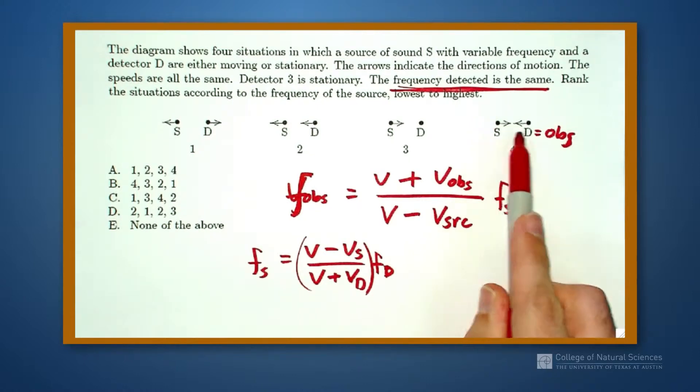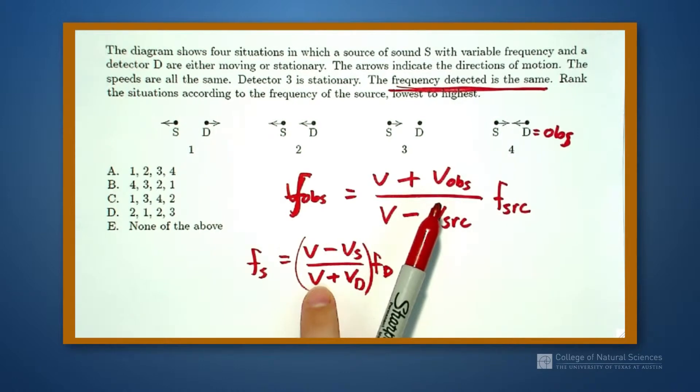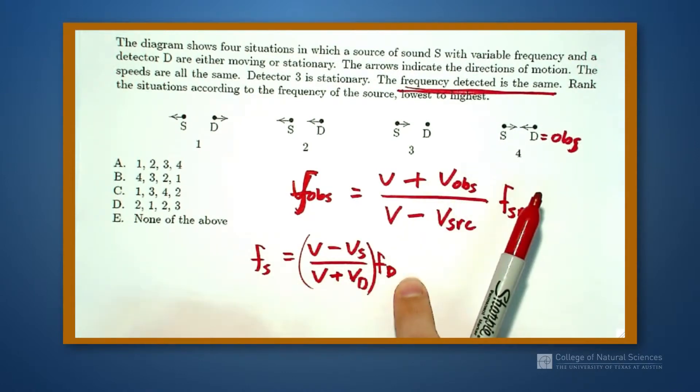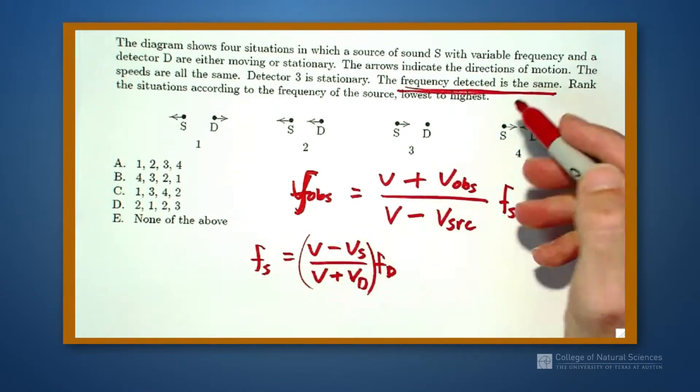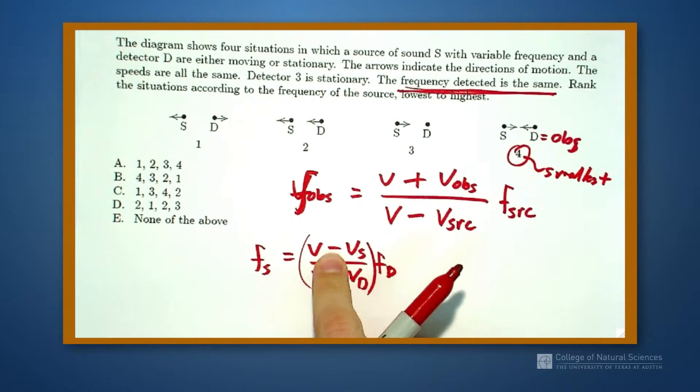So in this case, the source and the detector are moving towards each other. So I have velocity minus a positive value, so this is a shorter value divided by the velocity plus a large value, so that's going to be a larger value. So this case 4 is going to be my smallest. I'm dividing by a small number divided by a large number.